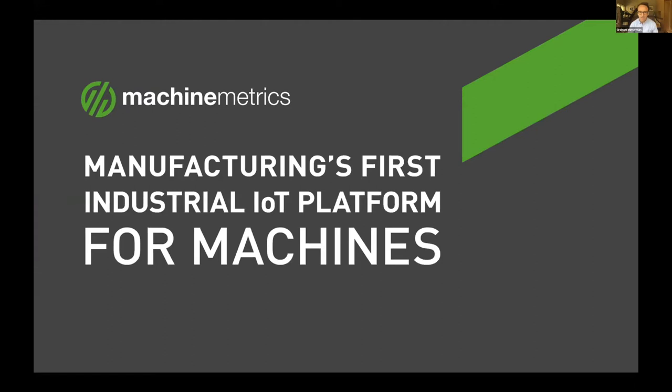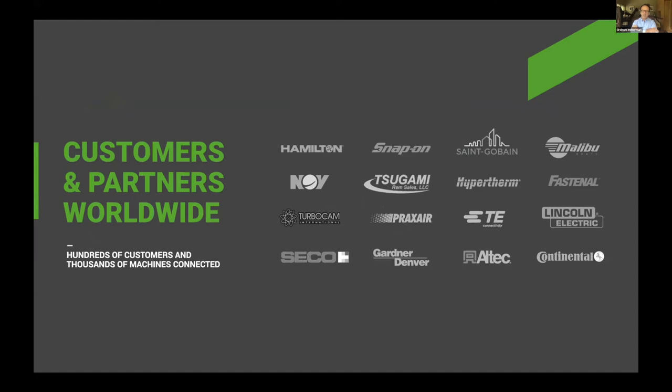For those of you that don't know us, Machine Metrics is manufacturing's industrial IoT platform for machines. We are accelerating industrial digital transformation by providing an intuitive and flexible platform to easily collect data from any piece of manufacturing equipment and transform that data into powerful, actionable applications that reduce your machine downtime, optimize your capacity utilization, and drive increased throughput and profitability for factories.